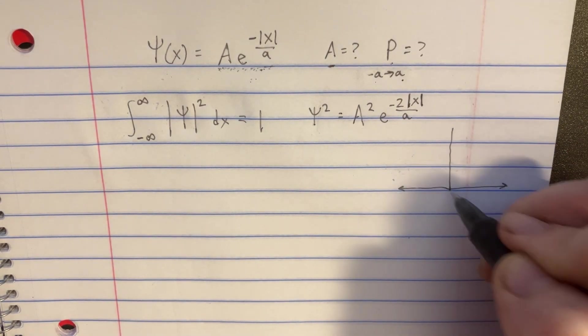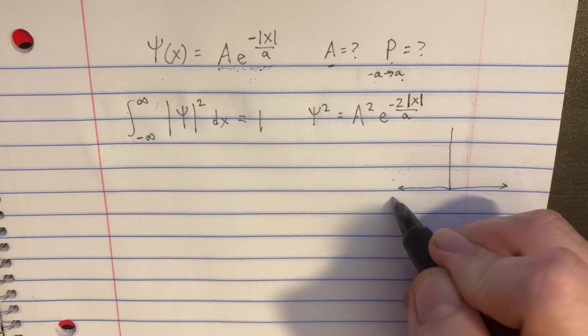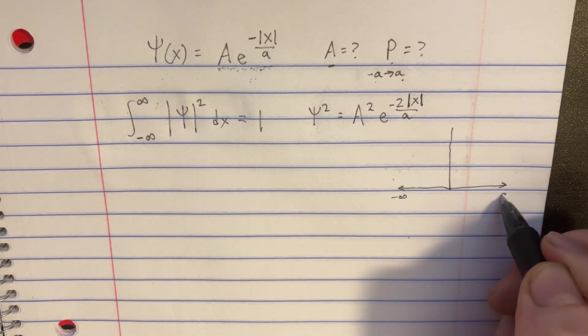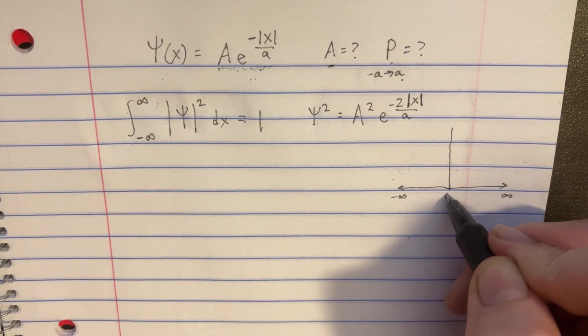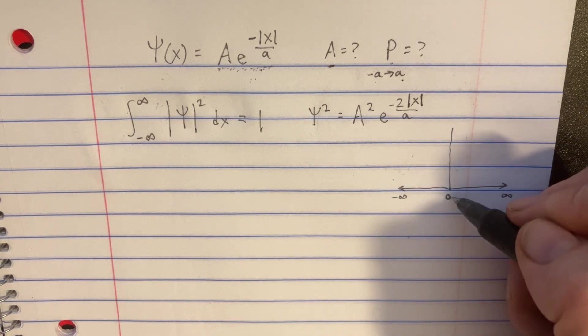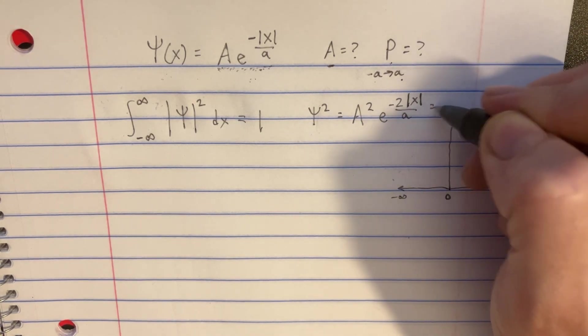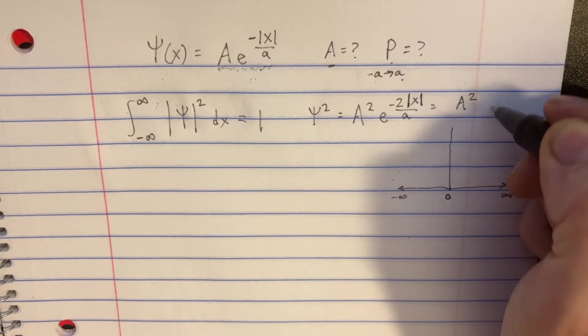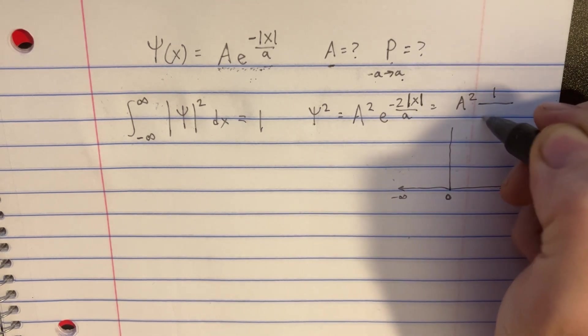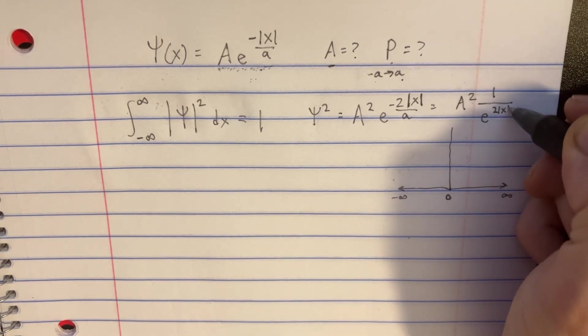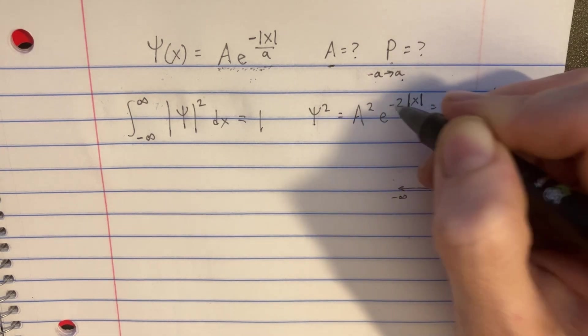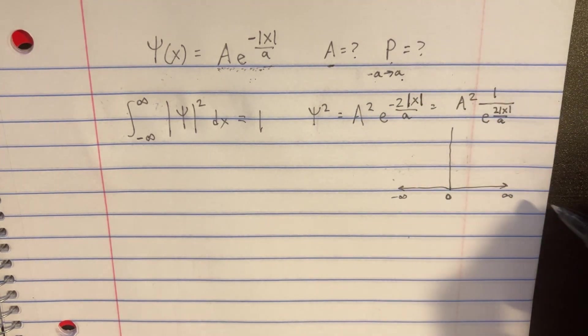So let's draw a little graph here of this function, so we could see this is going to be along the x-axis going from negative infinity to infinity. This is the 0. So let's start plugging in some numbers. If we plug a 0 into this function, realize this should be more like A squared, and then it's 1 over e to the 2 absolute value of x over a. So that negative isn't really like a negative. It just means like a fraction here.